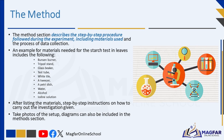The method section describes the step-by-step procedure followed during the experiment, including materials used and the process of data collection. Similar to how a cupcake recipe begins by listing all the necessary ingredients, the method section of an experiment outlines all the items required to conduct the investigation. An example of materials needed for the starch test in leaves includes: a Bunsen burner, tripod stand, glass beaker, test tube, white tile, a tweezer, a petri dish, water, alcohol, and iodine solution.